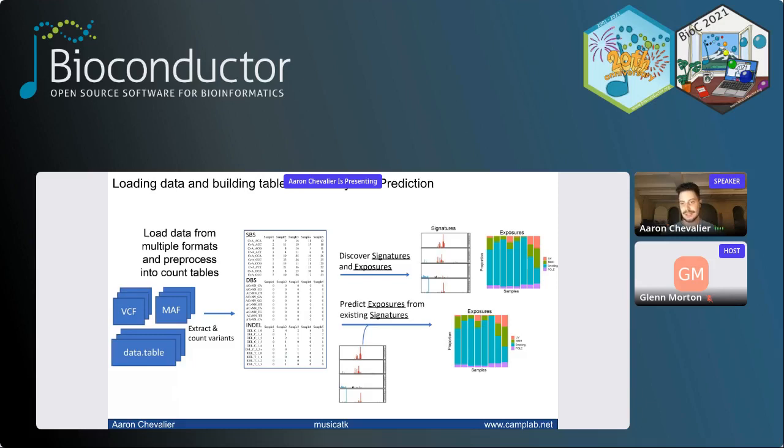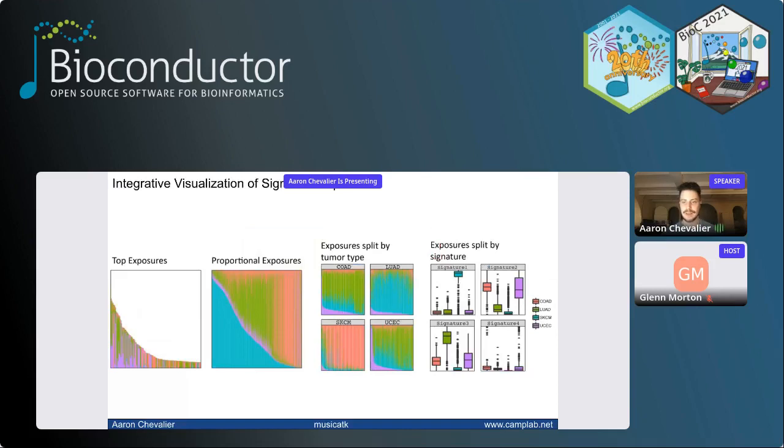So if you had a lung sample, you could break that down into, say, 40% of mutations caused by cigarette smoke, 60% caused by aging, for example. We can also predict exposures from existing signatures. So instead of finding signatures and exposures at the same time, we can take existing signatures, such as Cosmic, if you're familiar with that source, that has put a lot of work into building a really good set of signatures. We can take those signatures and find the exposures in our samples to those signatures as well. So beyond finding those exposures to those signatures in our samples, it's really important for analysis to actually be able to visualize these exposures.